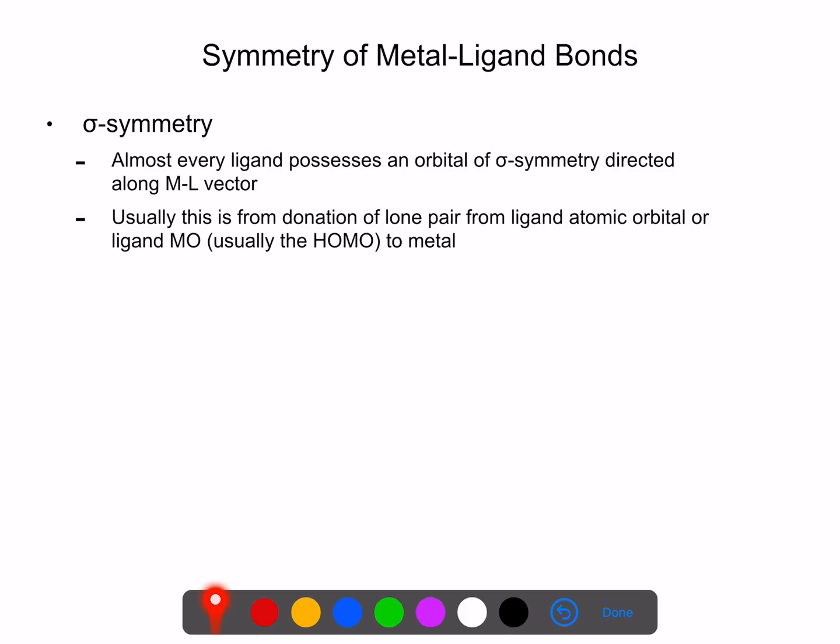So first, we can summarize how ligands bind to metal. And we can summarize them in three basic types. The first type of symmetry in which a metal can bond a ligand is through what's known as sigma symmetry. And sigma symmetry - almost every ligand possesses this. This is just forming a bond between the ligand and the metal. And this is usually done through a ligand donating an electron pair.